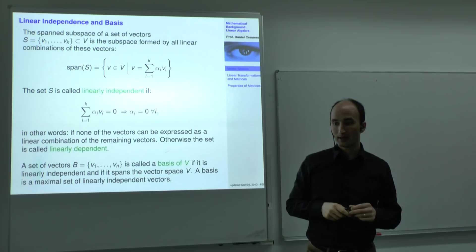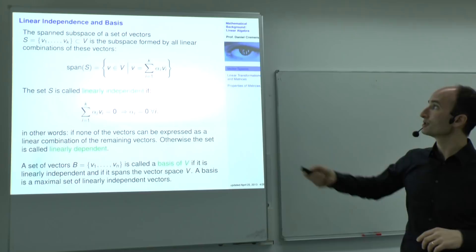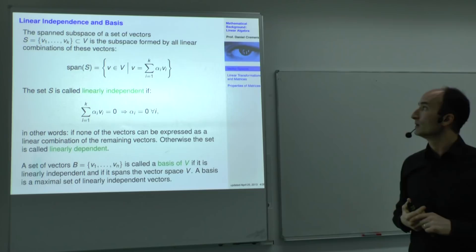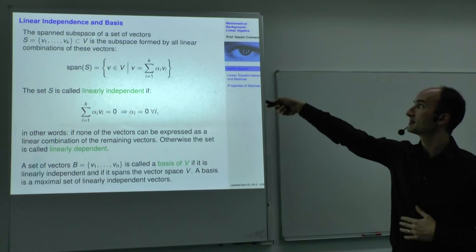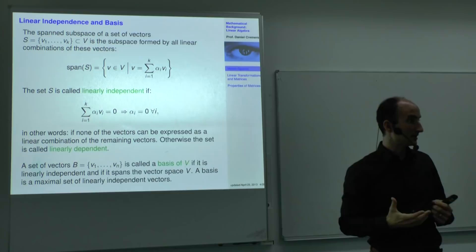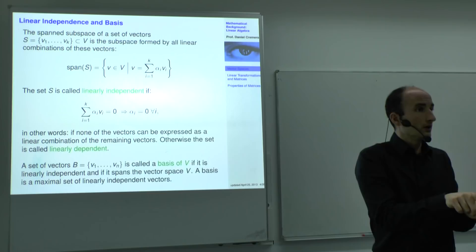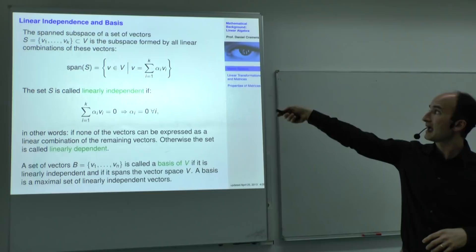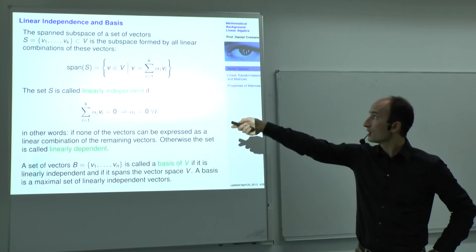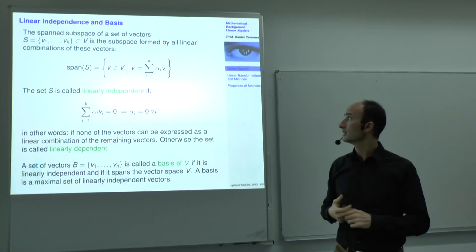In addition, there is the concept of a basis, which starts with the notion of linear independence. Once we have a set of vectors S = {v1,...,vk}, we can talk about a spanned subspace — the subspace they span is all linear combinations of these vectors. For example, any plane going through the origin is a subspace of R3, and you can typically find two orthogonal vectors that span it. Any point in that space can be reached by a weighted sum of these vectors.